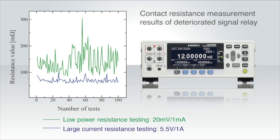as a result of the deterioration of the contact. When measuring a signal contact using a large current or high voltage, the oxide film on the contact can be damaged, temporarily causing the resistance to be small and resulting in a false measurement result.